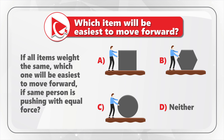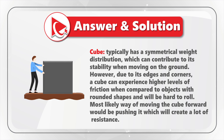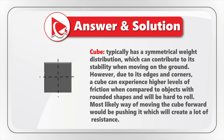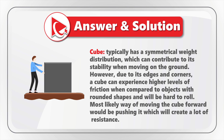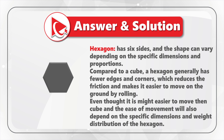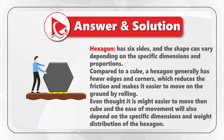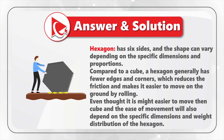Let's analyze all shapes individually. The cube has symmetrical weight distribution which contributes to its stability, but due to its edges and corners, it experiences higher levels of friction compared to objects with rounded shapes and will be hard to roll — the most likely way of moving it would be pushing, which creates a lot of resistance. The hexagon has six sides, and compared to a cube, it generally has fewer edges and corners, which reduces friction and makes it easier to move by rolling, though ease of movement depends on its specific dimensions.